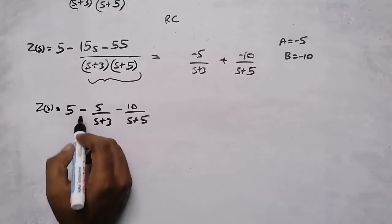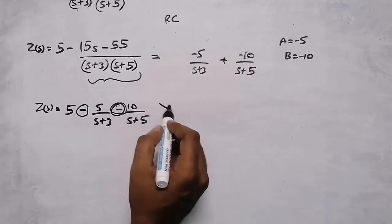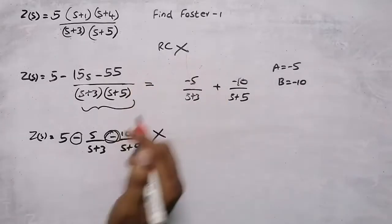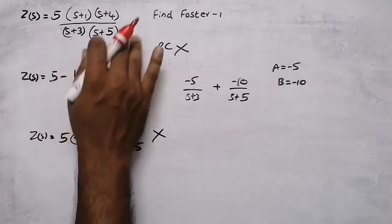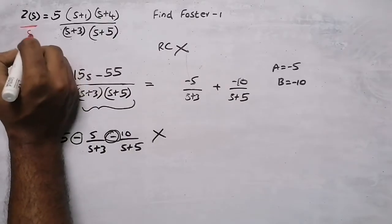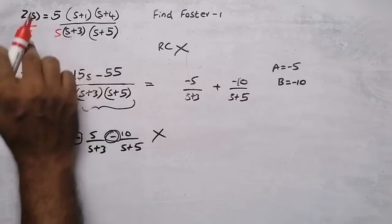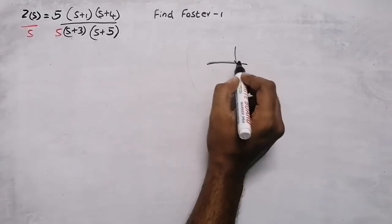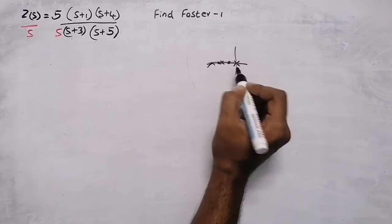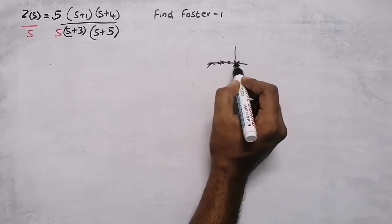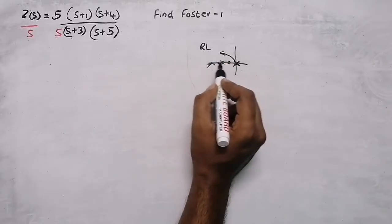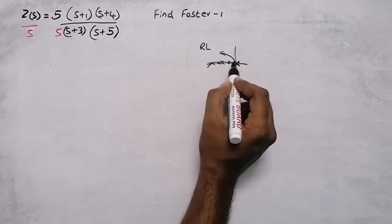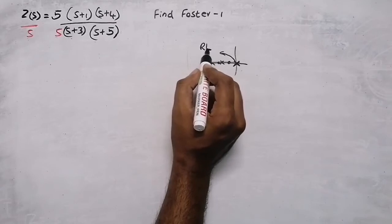We can see there is a negative sign, so we can't proceed with this RC network. If we are getting a negative sign, the impedance function is not an RC network. We need to add an s in the denominator on both sides. Now when we draw the pole-zero plot, we get a pole at the origin, then poles at minus 3 and zeros. Since there is a pole at the beginning, it will be an RL circuit.